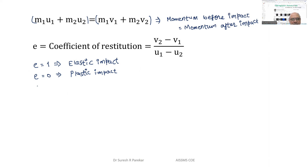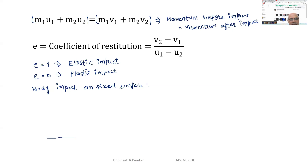There is another important case: when a body impacts a fixed surface. The best example is a ball released from a height. We define u1 as the velocity just before impact and consider the direction carefully.